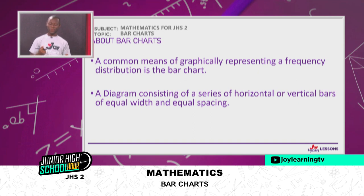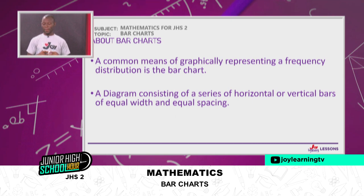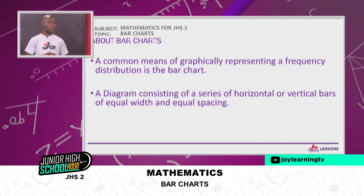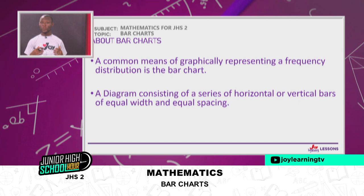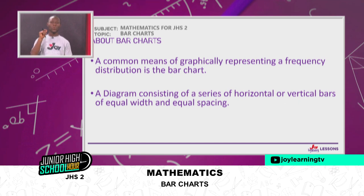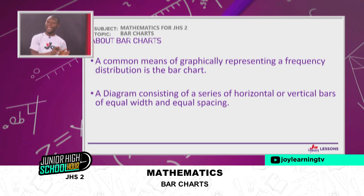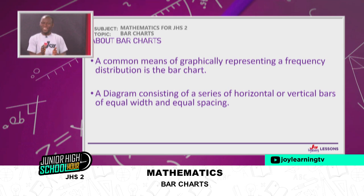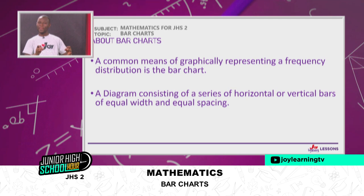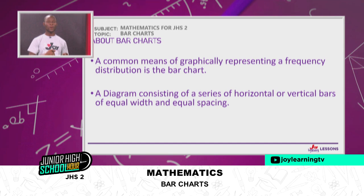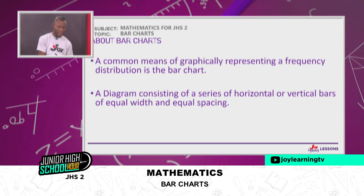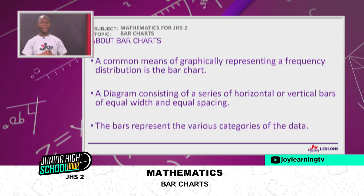A bar chart is a diagram that consists of a series of horizontal or vertical bars. We can represent bar charts sometimes horizontally, sometimes vertically — it's a style that depends on your choice. One thing of equal importance is that the bars must have equal width and equal spacing. The space between the first and second bar should be the same as the space between the second and third bar.